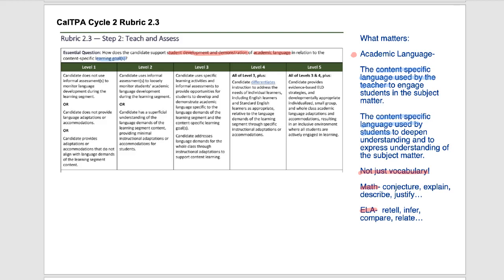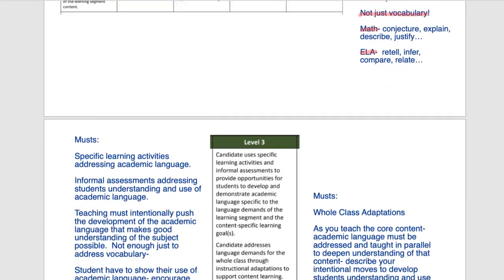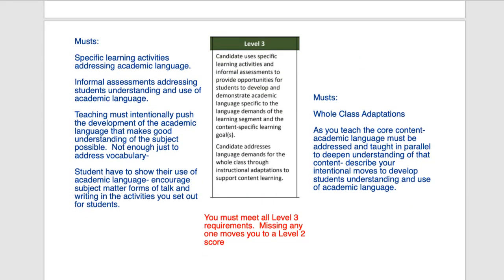So let's take a look at the requirements for 2.3. Important note, as always, you must meet all level 3 requirements. Missing any one of these requirements moves you to level 2. What I've done is I've taken level 3 apart and I'm setting out each of the requirements so you can make a kind of checklist for yourself. You want to do all of these things.